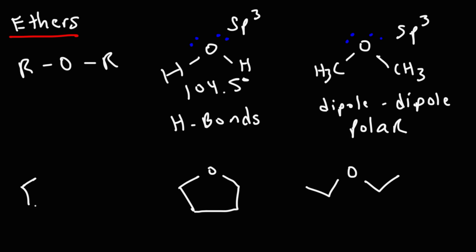Diethyl ether is a very common solvent used in organic reactions. Another common one is THF, tetrahydrofuran. You'll also encounter crown ethers in organic chemistry. Crown ethers are used to solvate metal cations. For example, 12-crown-4 contains 12 atoms and 4 oxygen atoms and is used to solvate the lithium cation. The 15-crown-5 ether is used to solvate the sodium ion, and the 18-crown-6 ether can solvate the potassium ion. Ethers are fairly unreactive under neutral conditions and in the presence of strong bases, making them useful as solvents in alkaline solutions.